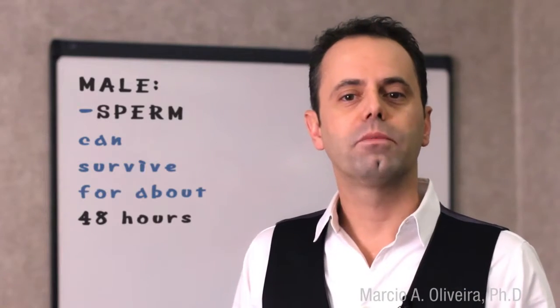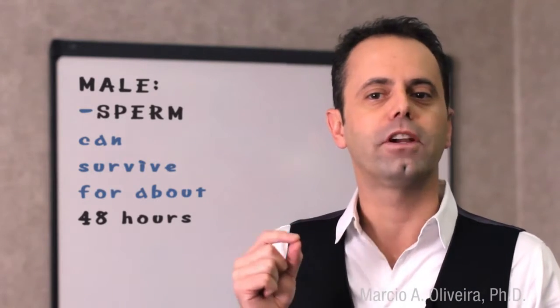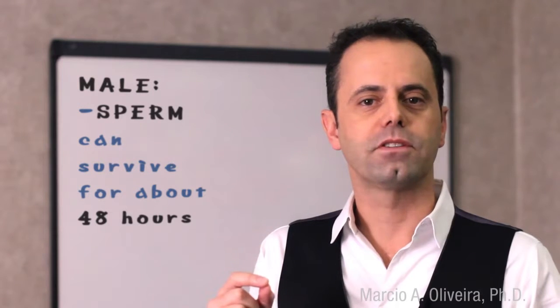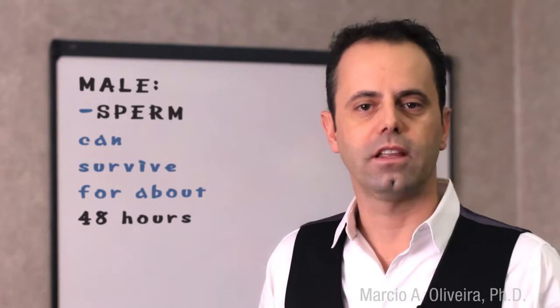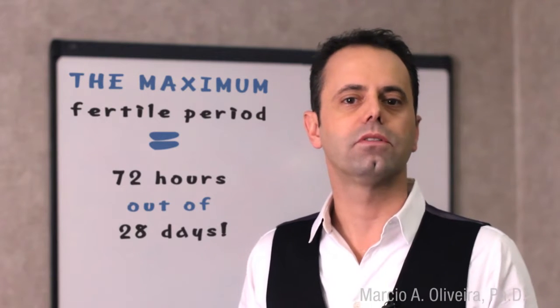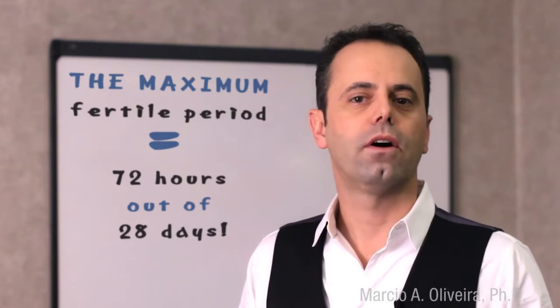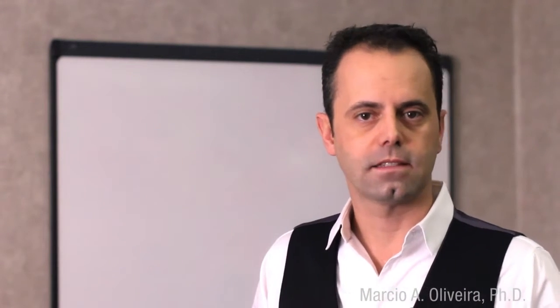However, a sperm survives for only about 48 hours, which is another constraint in this process. Therefore, the first — and probably only — example of a critical period in development is that the maximum fertile period is 72 hours out of every 28 days.